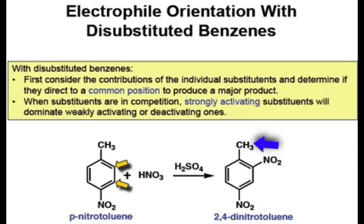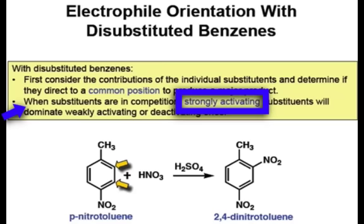However, when substituents that are already on the ring do not reinforce each other's directing ability, it is important to know which group is the stronger director. Therefore, in those cases, you need to recognize the strong electron donating groups such as hydroxyls, amines, and alkoxy substituents, as these types of groups will dominate the directing ability of the ring.